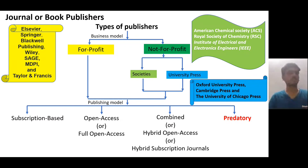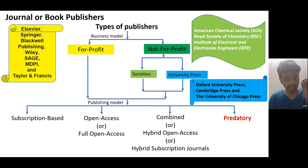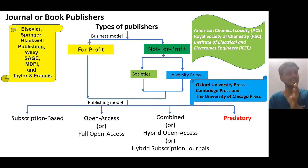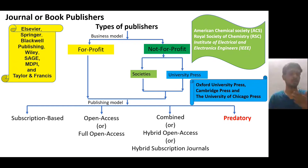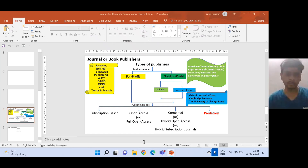I request everyone to go for good journals and avoid predatory journals and paid publications. Don't waste your experimental efforts and writing work on predatory journals that charge 3,000–4,000 rupees for no real outcome. Focus on journals in good indexing services. Scopus-indexed journals are also a good option that are not necessarily paid. Thank you for listening.